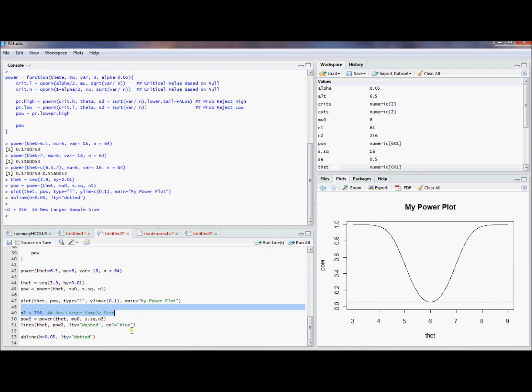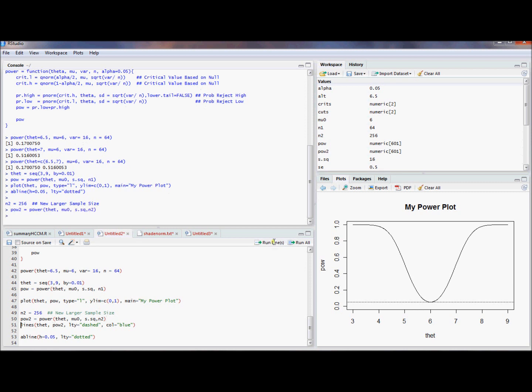So what happens if we get a larger sample size to power? Well, let's go ahead and define N2. Then we can get a vector of power, computed power values using that power function we already defined. And just instead of N1, we use N2. And we can plot this on top of the same object using the lines command. And I'm going to use the option LTY equals dashed to plot a dashed line. And I'm going to make the color blue so we can really see the difference between these two.